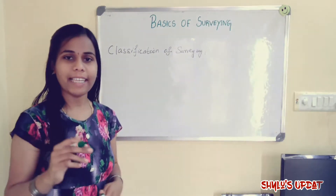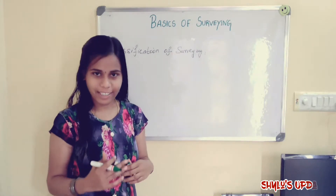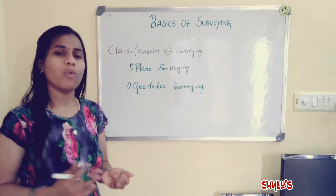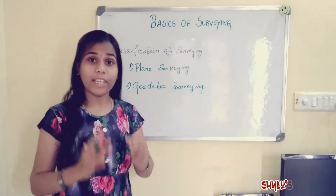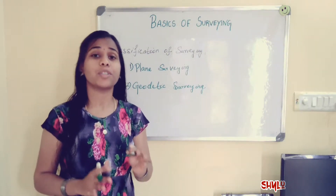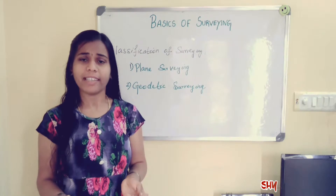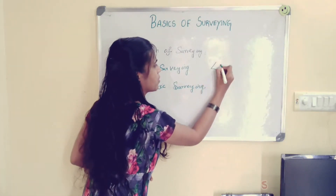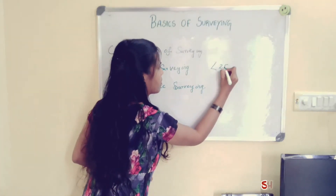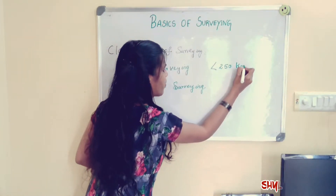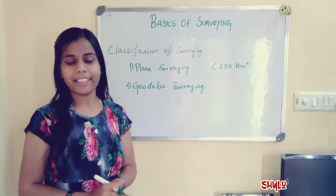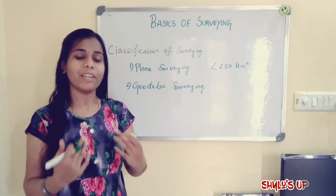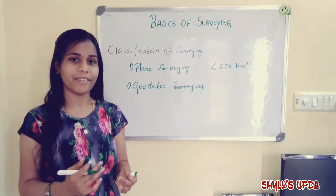The first type is plane surveying and the second is geodetic surveying. What is meant by plane surveying? When the surveying area is less than 250 km², then it is called plane surveying. What is geodetic surveying? When the surveying area is greater than 250 km², then it is called geodetic surveying.